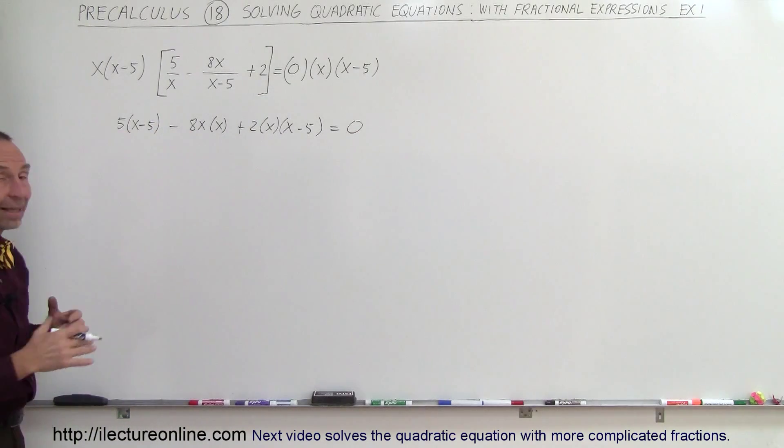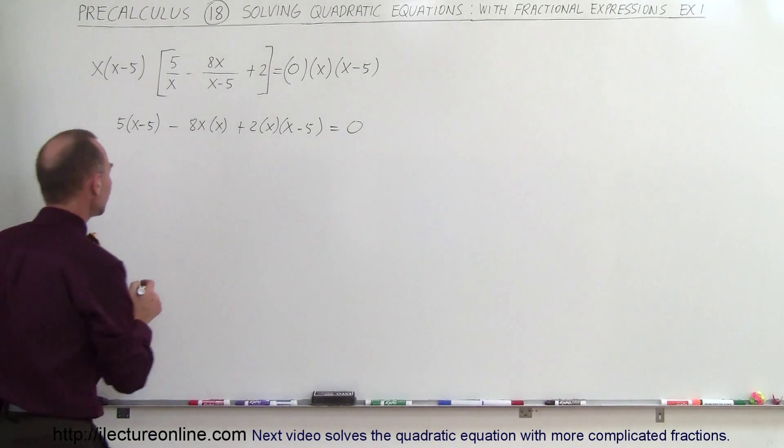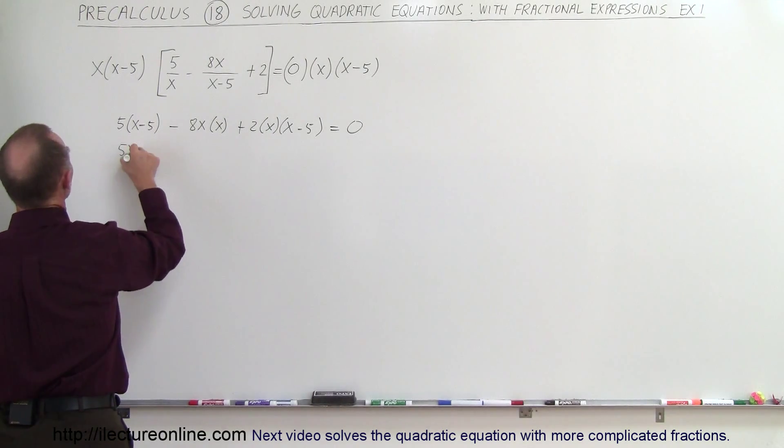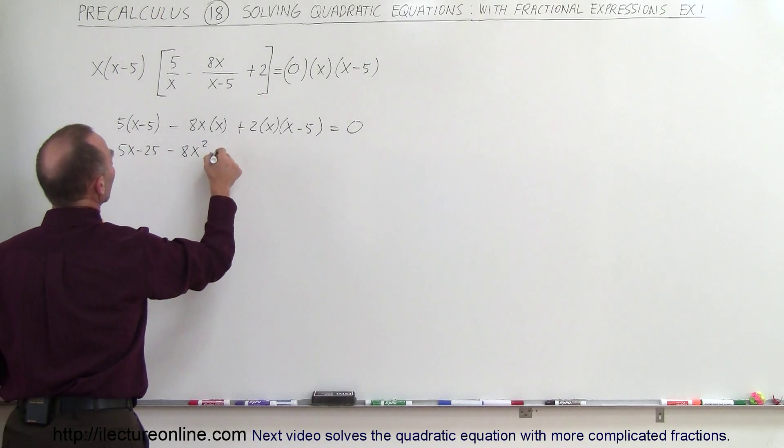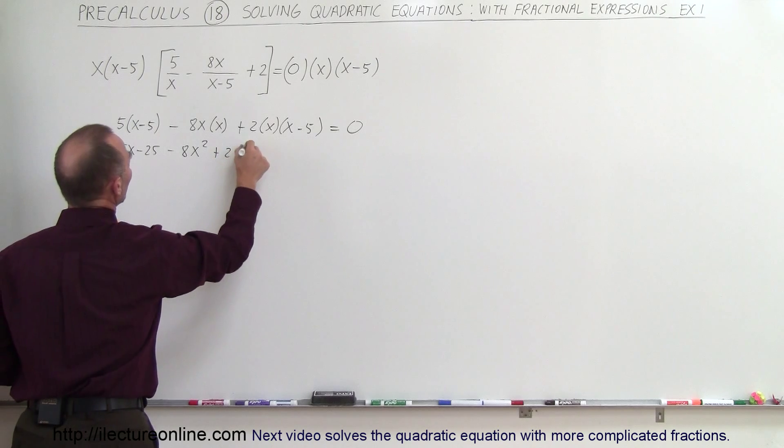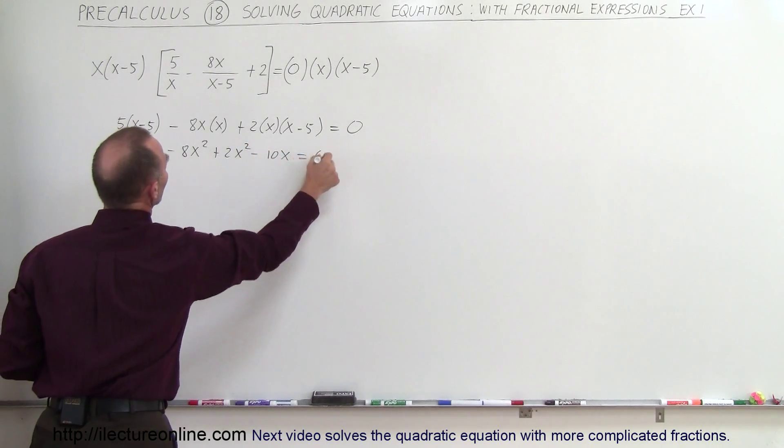Now when we multiply this out and get rid of parentheses, you'll notice now we end up with a quadratic equation. So this becomes 5x minus 25 minus 8x squared plus 2x squared minus 10x equals 0.